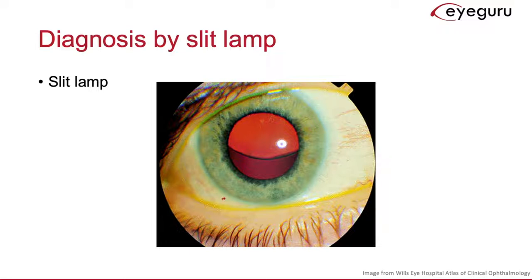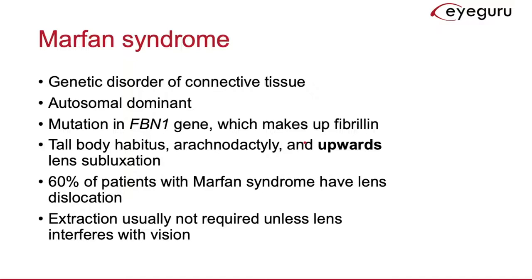As a review, Marfan syndrome is a genetic disorder of connective tissue. It is autosomal dominant and caused by a mutation in the FBN1 gene, which makes up fibrillin. Fibrillin is an important component of elastic fibers and connective tissue.